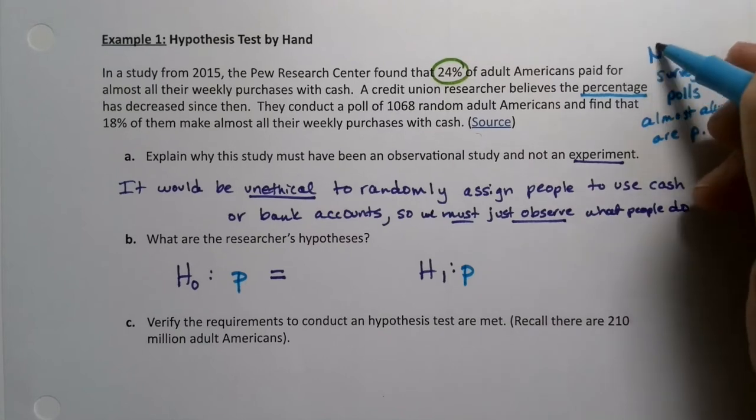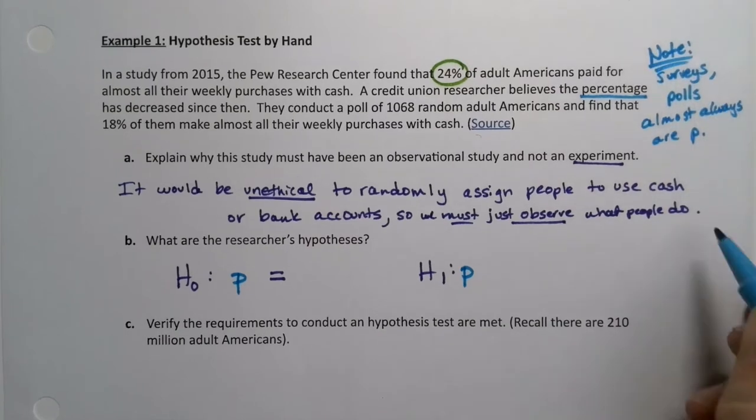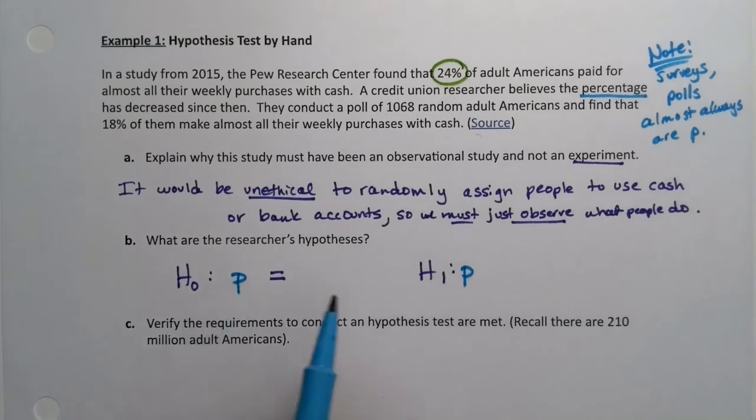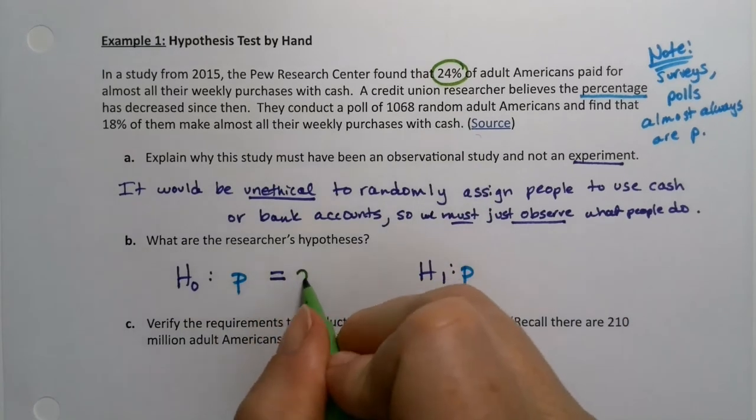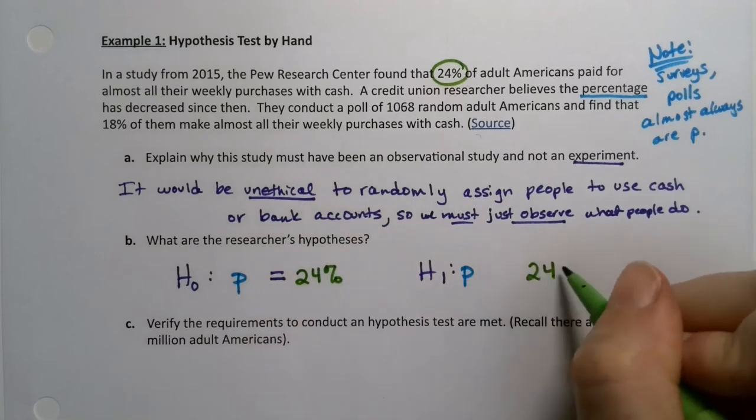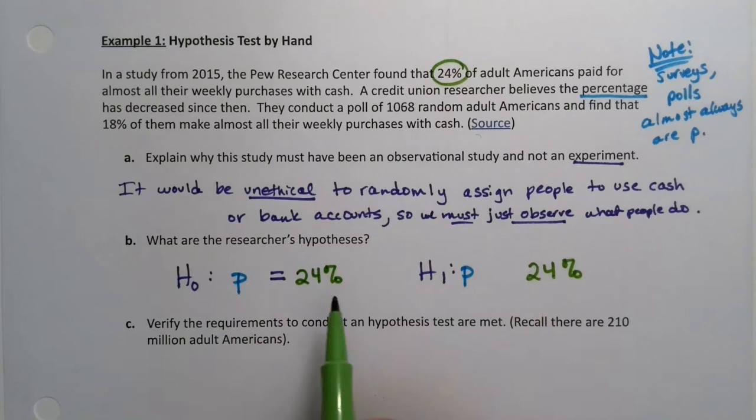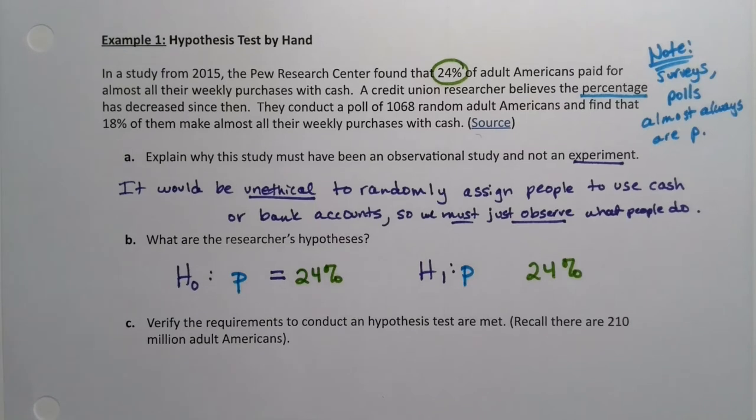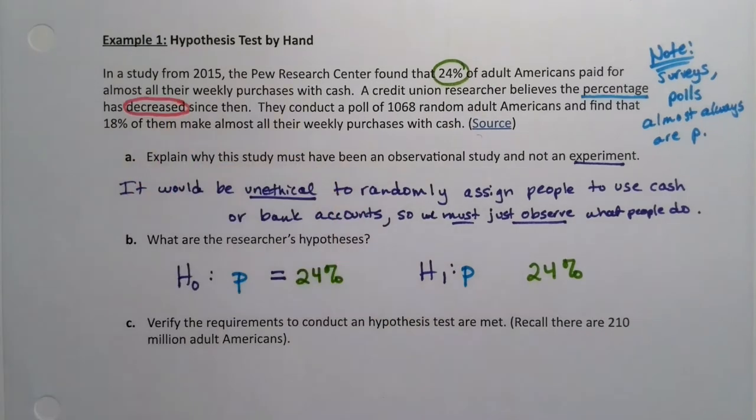Right. I can make a little note. Right. P for parameter or P for population proportion. Same thing. Right. So my parameter is a population proportion. It's P. Okay. So then I assume it's 24% unless I can prove otherwise. So this number will also be 24%. It's going to be 24% for both of them. And then the researcher believes the percentage has, and then you have to look for the word. You're looking for words that'll give you a direction, greater than, less than. And the word is right here, decreased. So that's less than. See all those skills from 10-1 still useful.